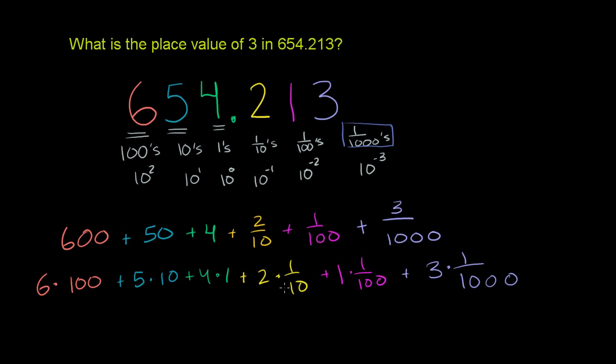So hopefully this, when you write it out like this, gives you a sense of what it means when we say place value. The 6, three digits to the left of the decimal, is in the hundreds place, so it represents 6 hundreds. This represents 5 tens, because it's in the tens place. This represents 4 ones. You go to the thousandths place, this 3 literally represents 3 one-thousandths.